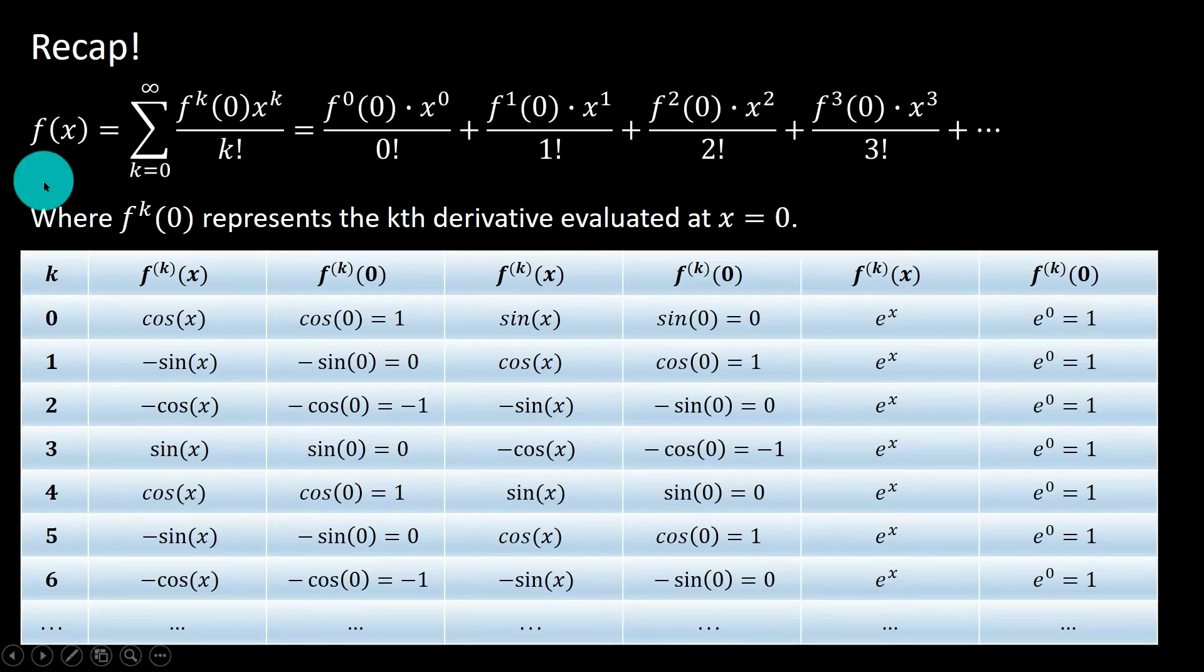We talked about the Maclaurin expansion, which can also be called the Taylor Series expansion centered at 0. The idea here being that you're always going to write x to the power of k and k factorial, that'll be constant. So you can always start out by writing these terms out here, because those will always be included in your series.